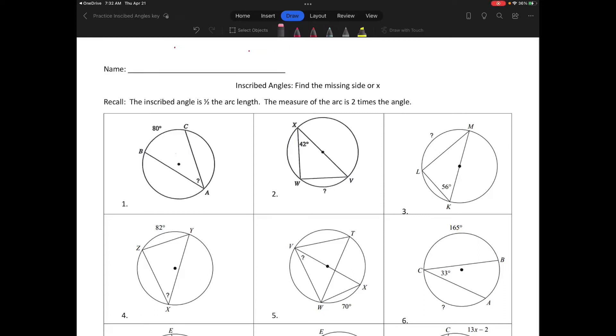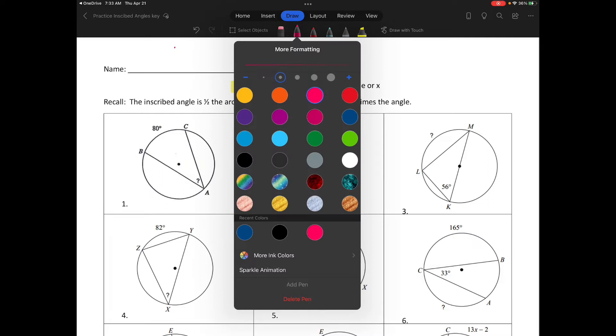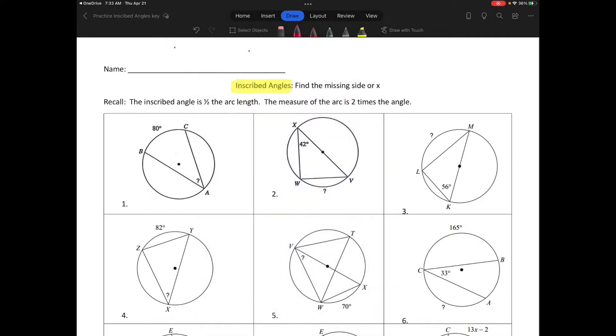Good morning boys and girls. In the second video we're going to look at inscribed angles. In an inscribed angle, the difference is that the vertex is now on the circle itself. You can look at all of these and see this is where my vertex is, it lies on the circle.